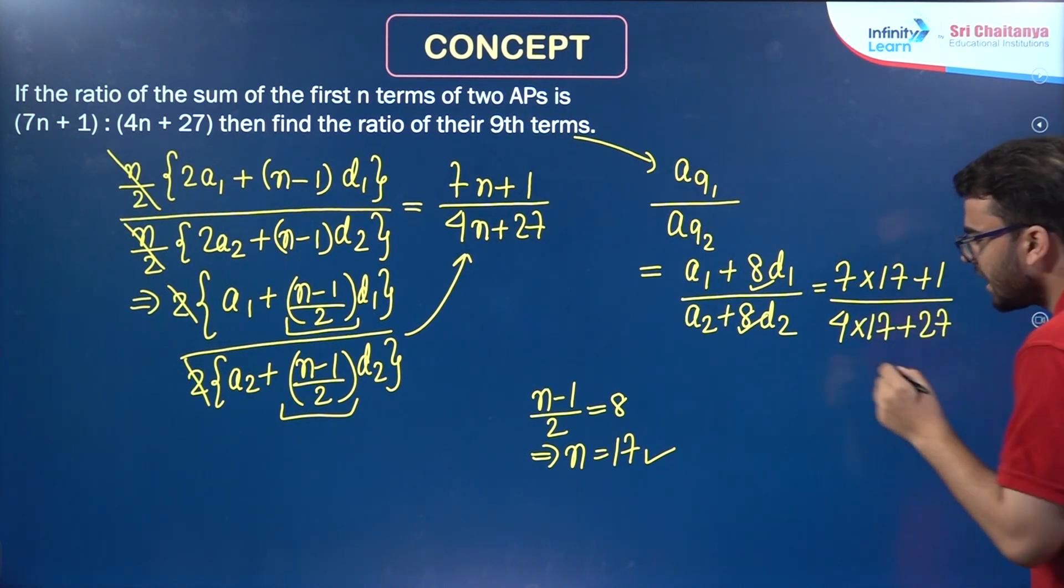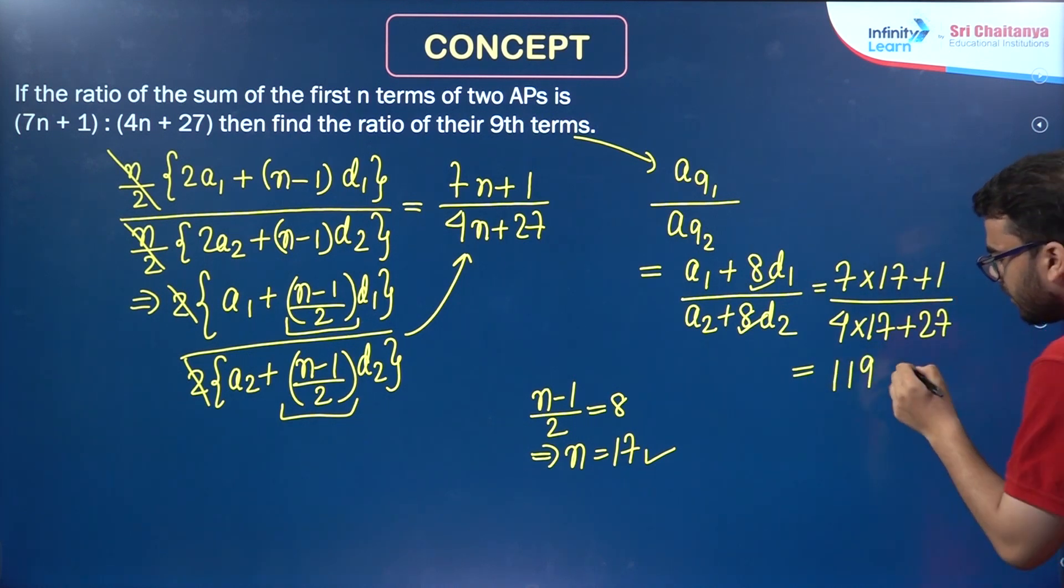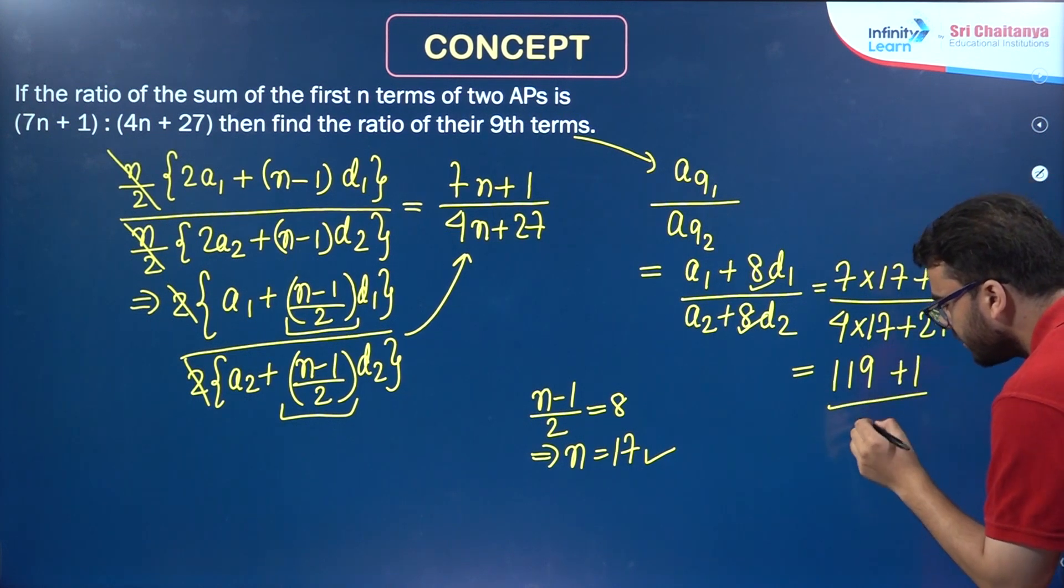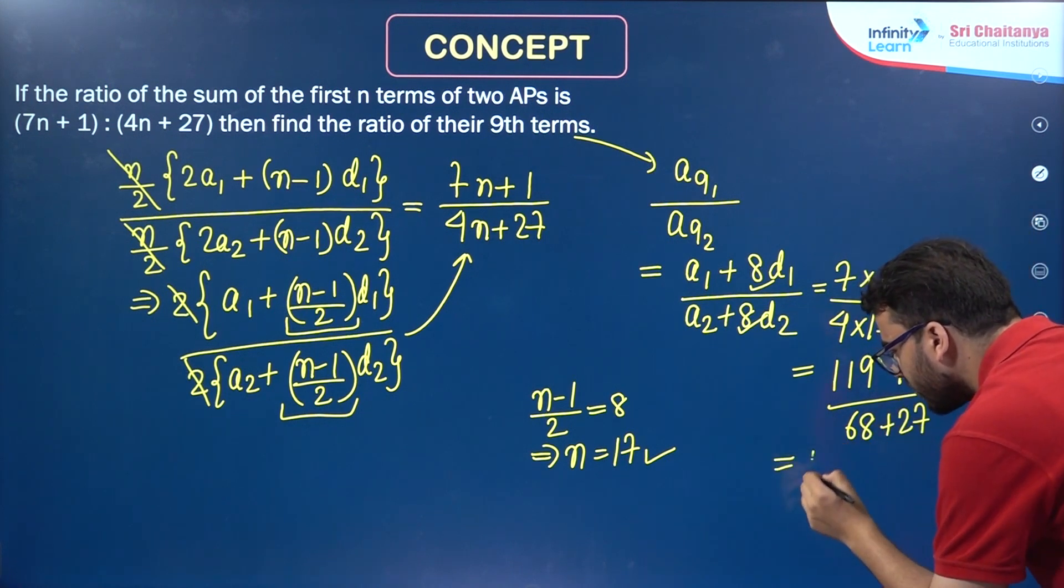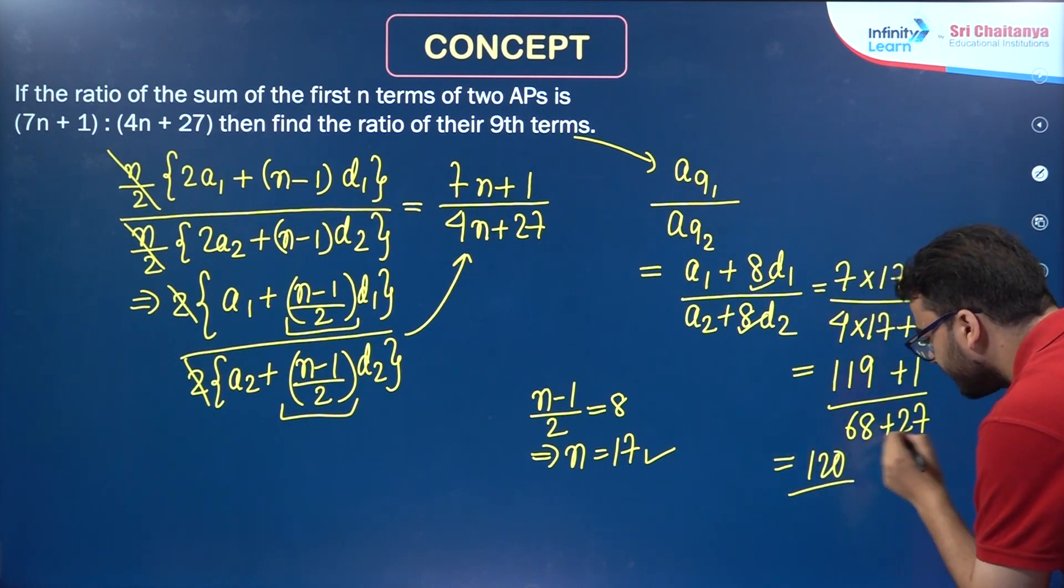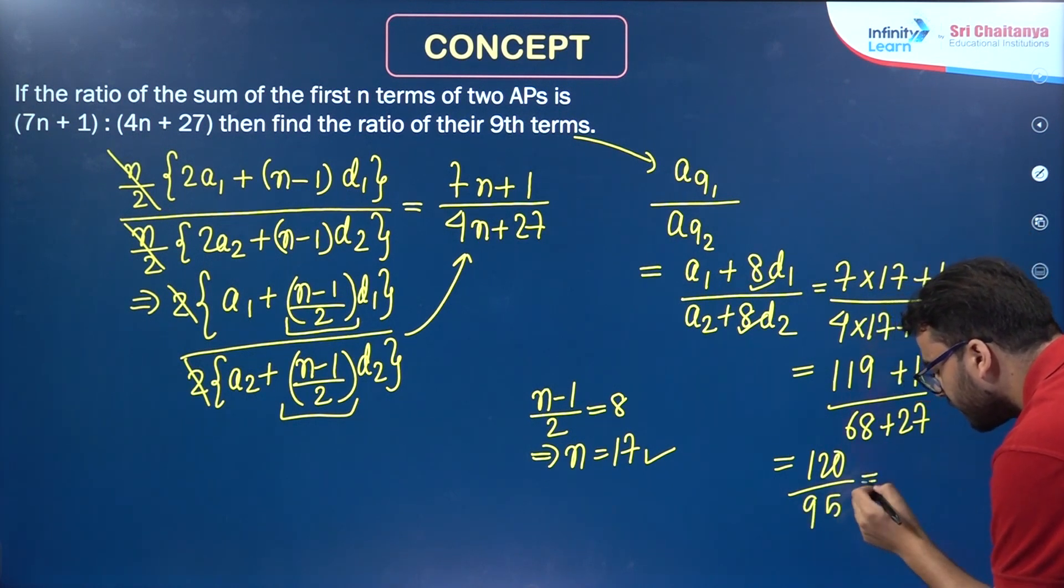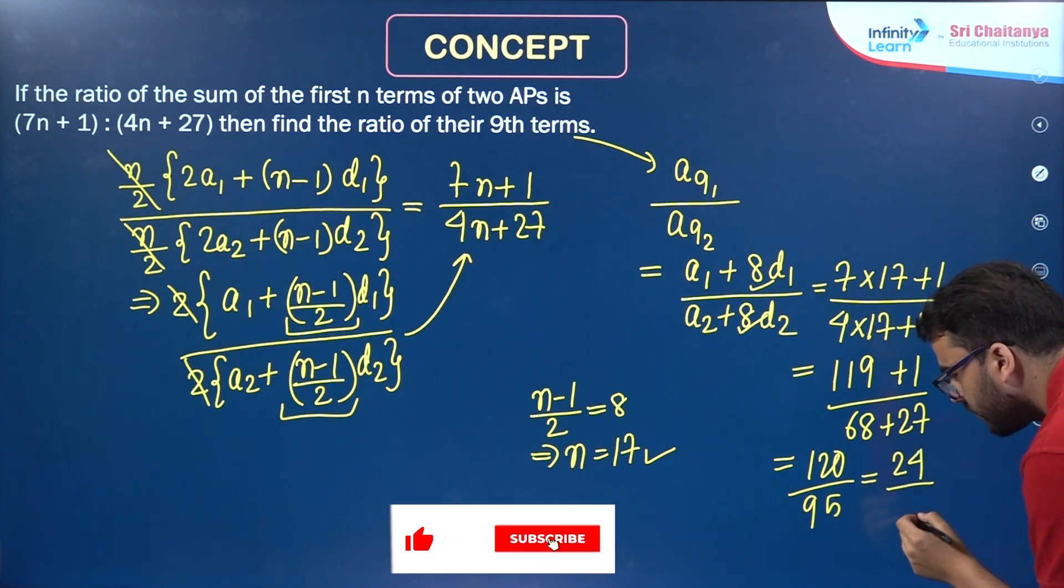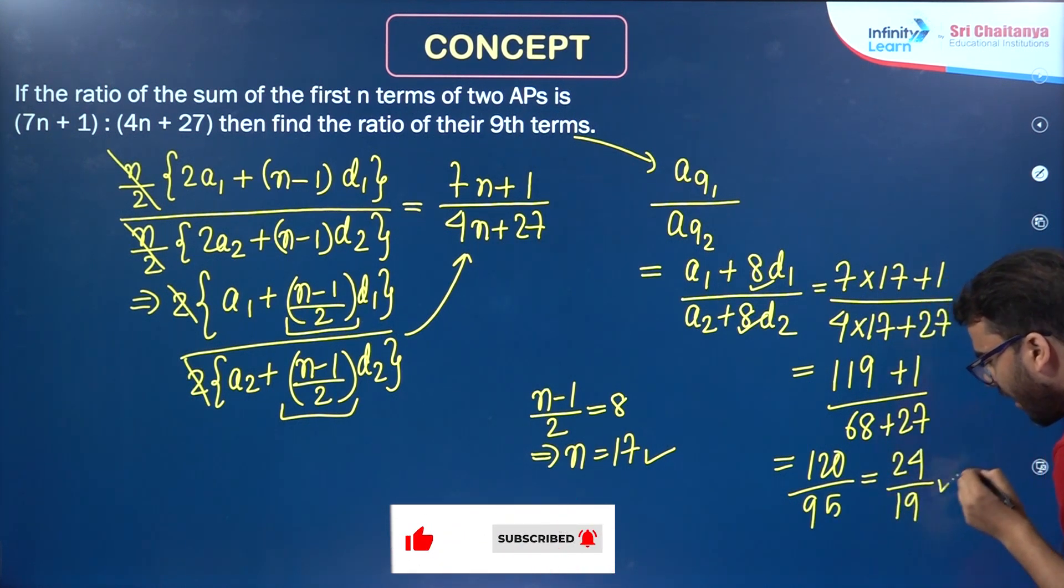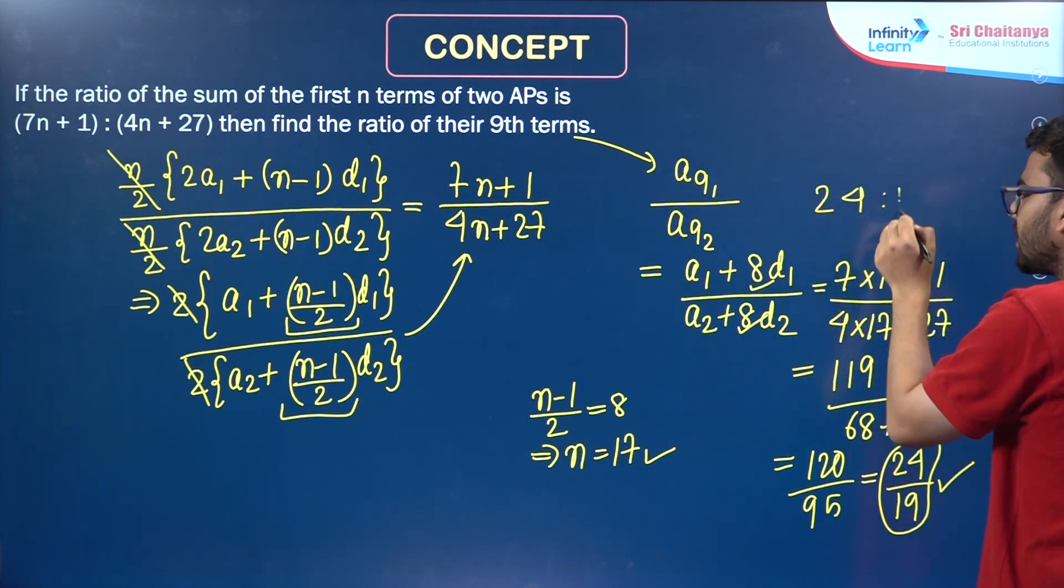So, this is the answer. You can just calculate it. Plus 1 divided by, so that is equal to 120 divided by, so the required ratio is 24 is to 19. You can write like this, 24 is to 19.